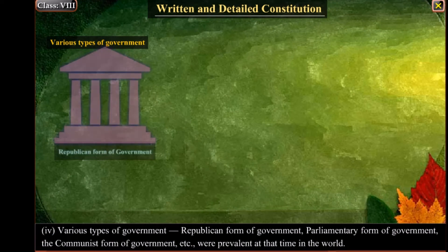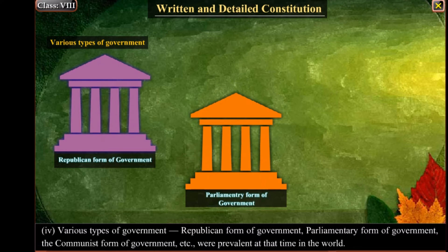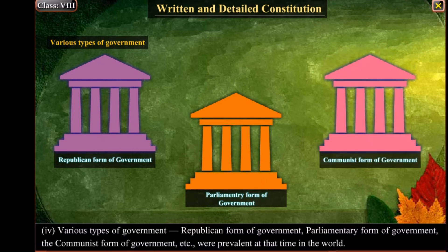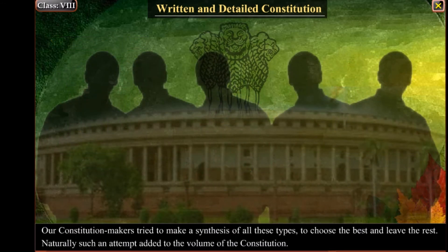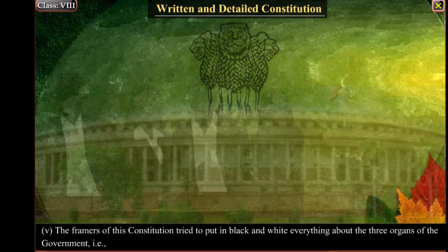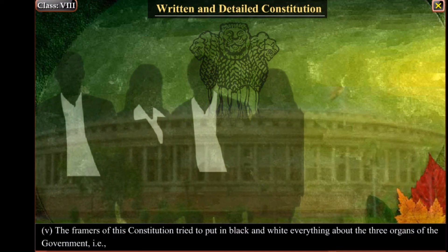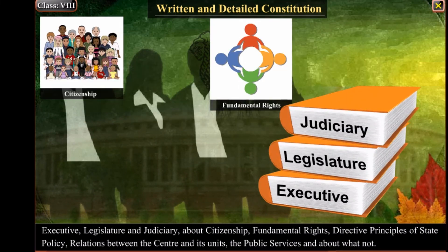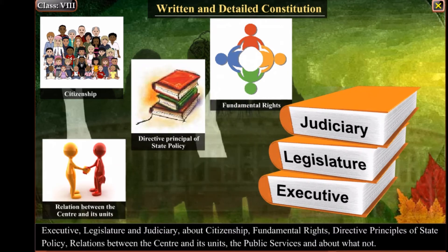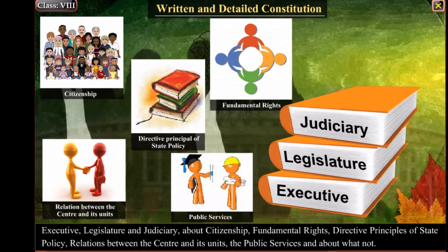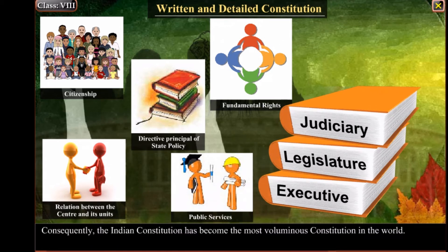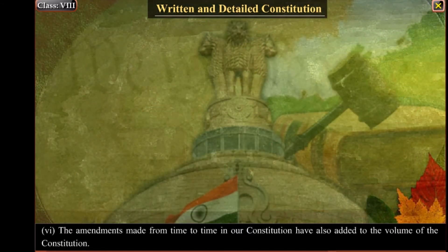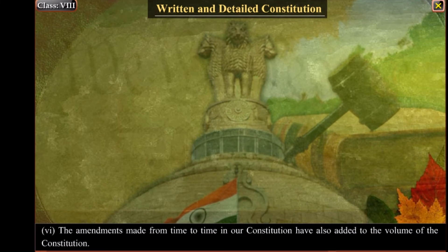Various types of government — republican, parliamentary, communist, etc. — were prevalent at that time in the world. Our constitution makers tried to make a synthesis of all these types, to choose the best and leave the rest. Naturally, such an attempt added to the volume of the constitution. The framers also tried to put in black and white everything about the three organs of the government — executive, legislature and judiciary — about citizenship, fundamental rights, directive principles of state policy, relations between the center and its units, public services, and more. Consequently, the Indian Constitution has become the most voluminous constitution in the world, and amendments made from time to time have also added to its volume.